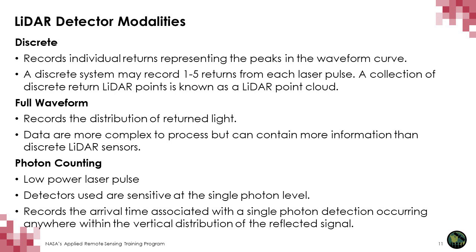There are three different laser detector modalities: discrete, full waveform, and photon counting. Discrete records individual returns representing only the peaks in the waveform curve, usually between one to five returns per pulse; a collection of discrete returned LiDAR points is called a LiDAR point cloud. Full waveform records the entire distribution of returned light — more complex to process but contains more information. Photon counting uses a low-power laser pulse with detectors sensitive at the single photon level, recording the arrival time associated with single photon detection anywhere within the vertical distribution of the reflected signal.